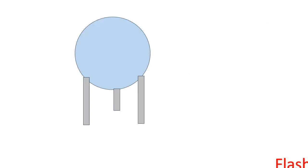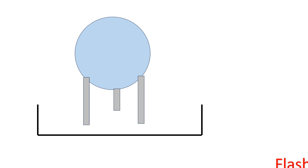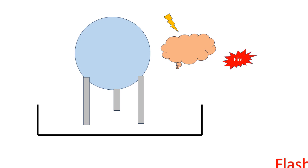Similarly, for the same sphere, if the leakage is through a small hole and it disperses in the air, creating an air and flammable gas mixture in the form of a vapor cloud, and that vapor cloud ignites, it creates a fire that is called a flash fire.